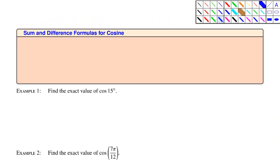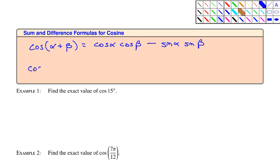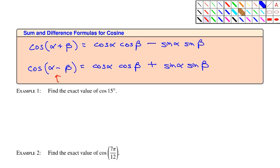Let's write down the sum and difference formulas for cosine. The cosine of (alpha plus beta) equals cosine α times cosine β minus sine α times sine β. And the cosine of (alpha minus beta) equals cosine α times cosine β plus sine α times sine β. Notice that whatever sign is in the sum or difference, it is the opposite sign in the cosine formula. We'll see that's not the case in the sine formula.